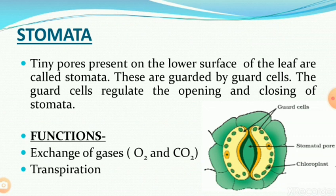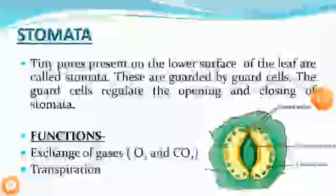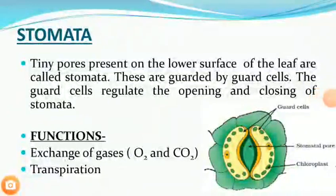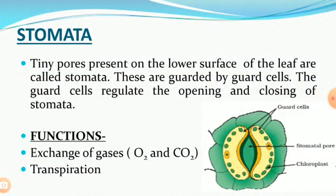Stomata are used to exchange gases like oxygen and carbon dioxide from the atmosphere, and also for transpiration. Transpiration means loss of water in the form of water vapor from the stomata. This process helps in the water cycle and the movement of water from the roots to the leaves in plants.